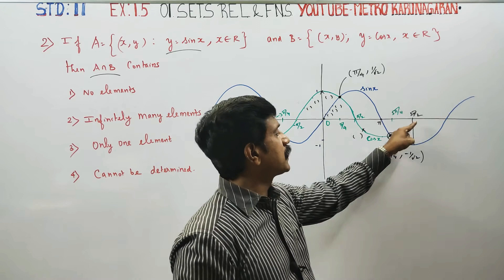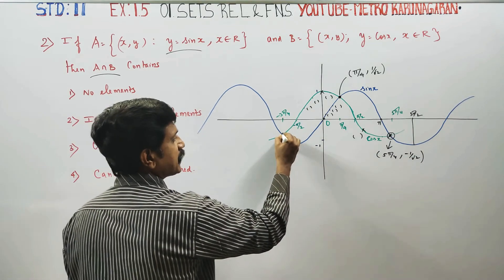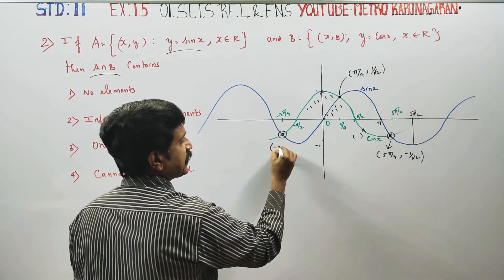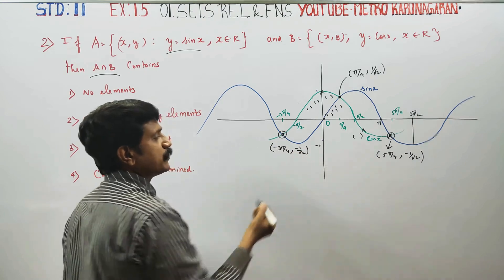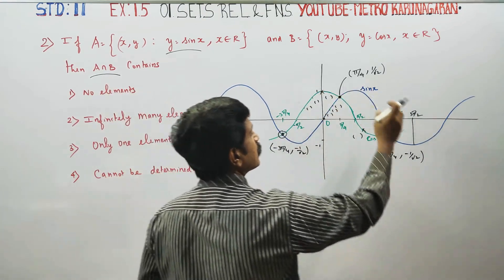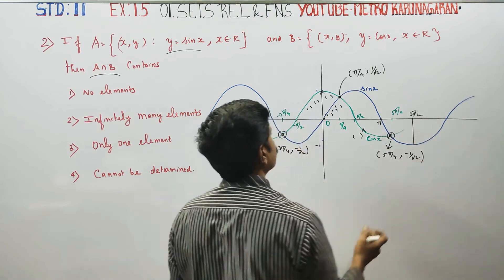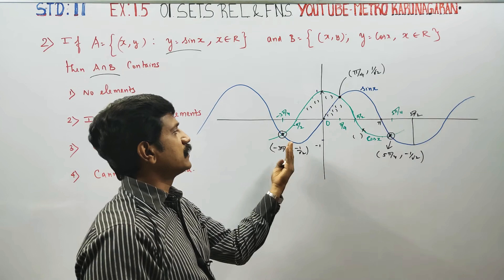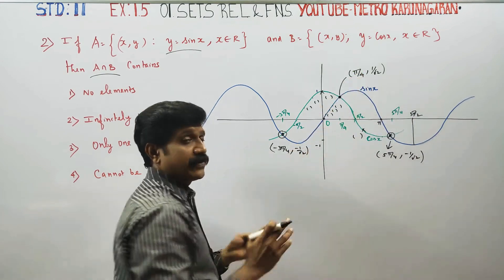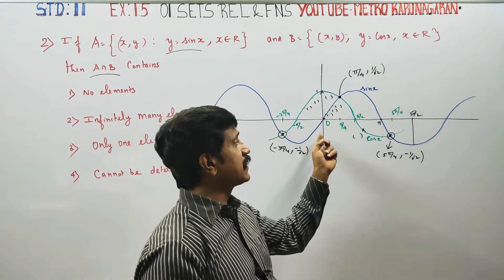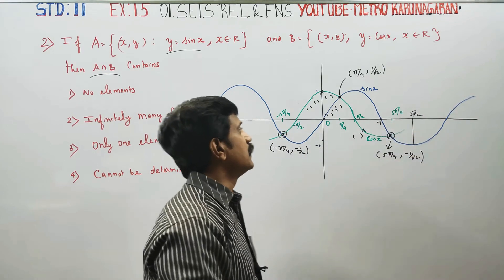The green curve and blue curve intersect. Another intersection point is (−5π/4, −1/√2). This point has x = −5π/4 and y = −1/√2. The green curve is the cos curve and the blue curve is the sin curve. These are the intersection points.